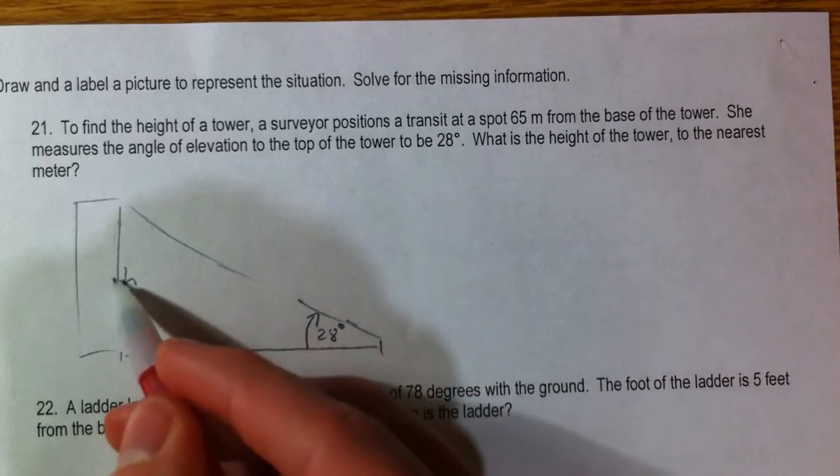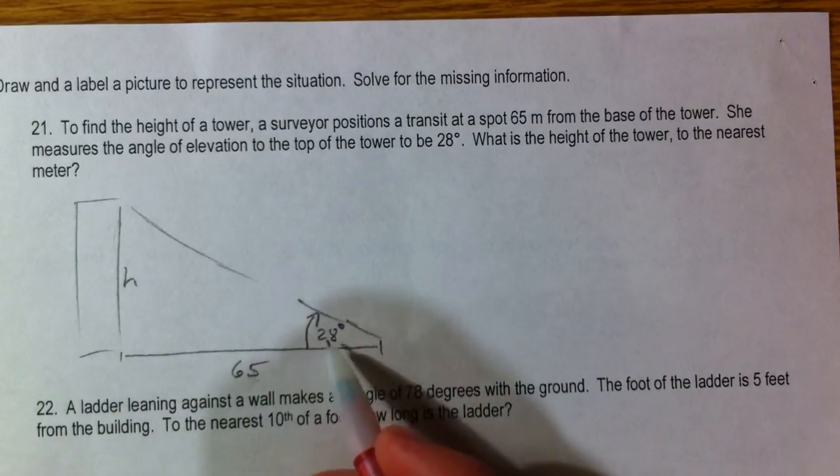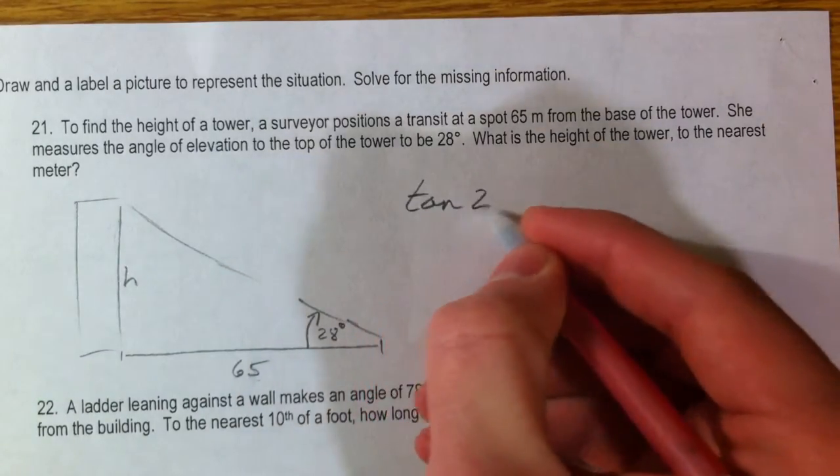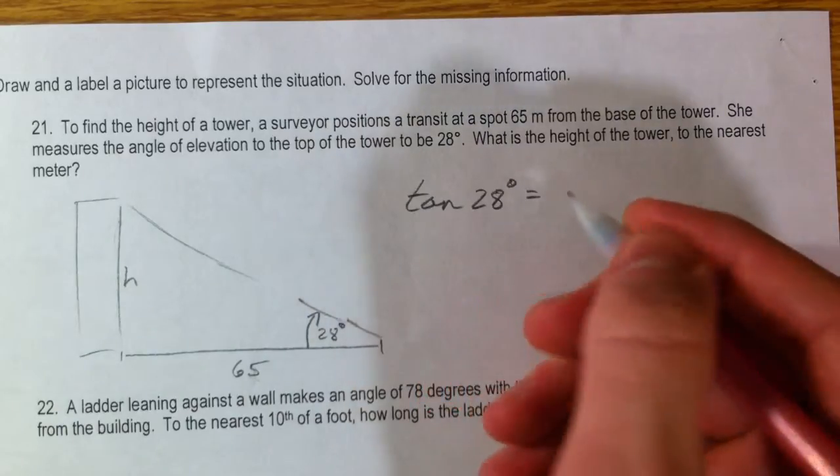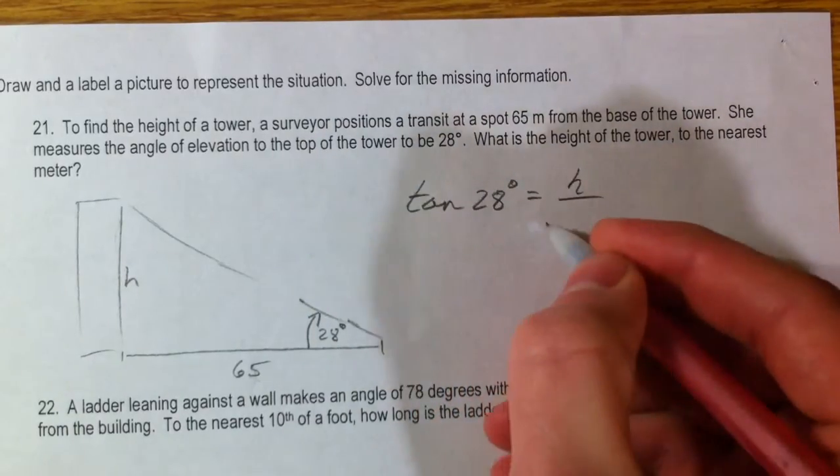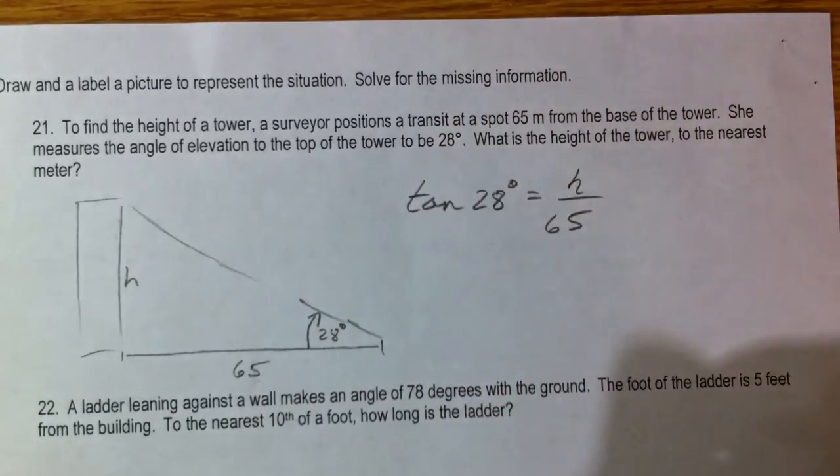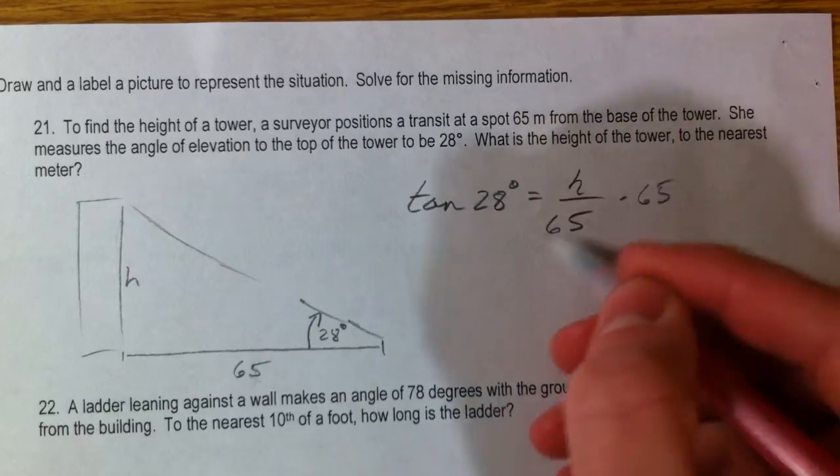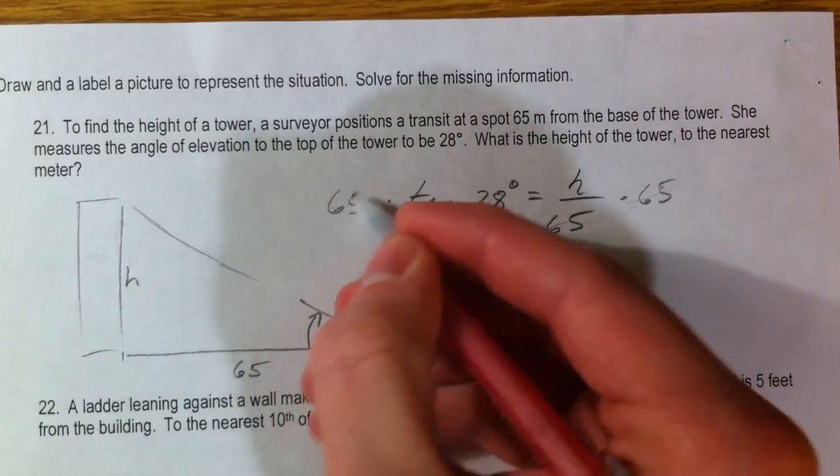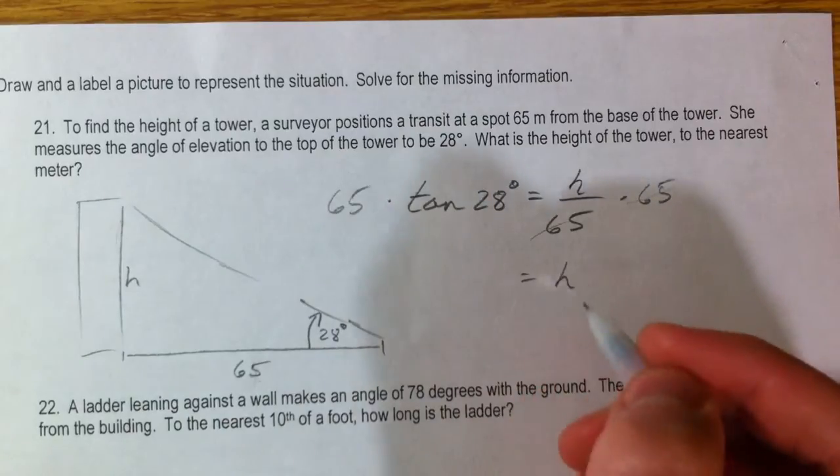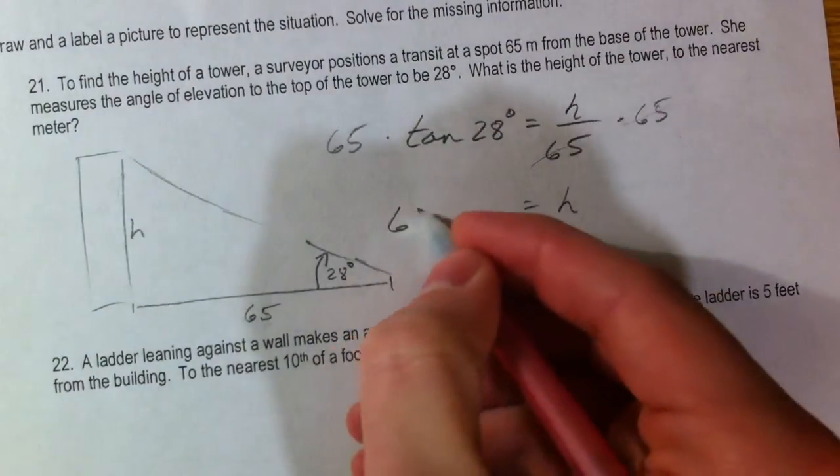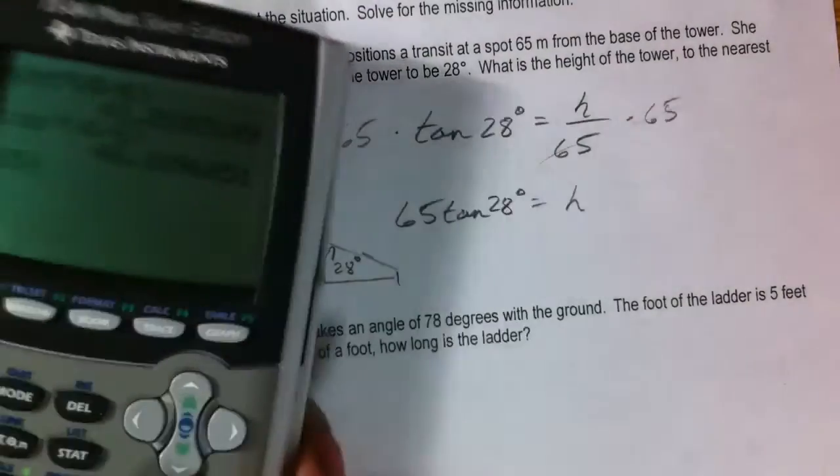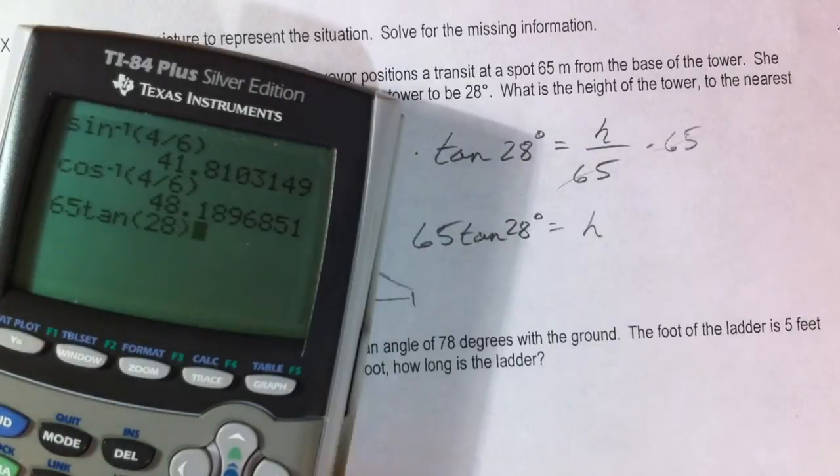So we've got opposite, adjacent to this angle, and so I'm going to say the tangent, because it was opposite and adjacent, so tangent of 28 is H over 65. To solve this, to get H by itself, we've got to multiply both sides by 65, cancels that out, times 65. So H is equal to 65 times the tangent of 28, making sure you're in degree mode.